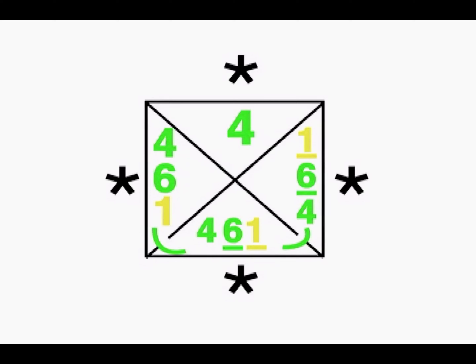On page 71 of the book, we show you a new symbol. This is represented by a line under the number. When you see this, it indicates that these are notes to be played again, even though there are other notes that will be held.